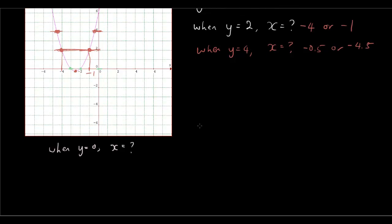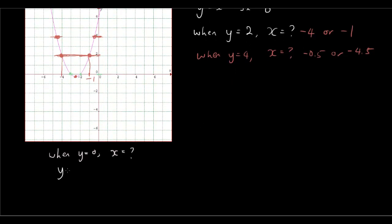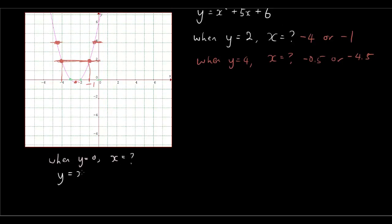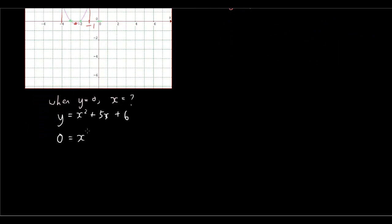So how we solve that algebraically: take the equation y equals x squared plus 5x plus 6, and make y equal to 0. Substitute 0 in for y, so 0 equals x squared plus 5x plus 6. The next thing you need to do is factorize this equation. If you're not sure how to do that, there's another video in the Year 8 to 10 section. By factorizing we get (x plus 2)(x plus 3) equals 0.